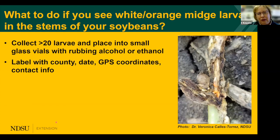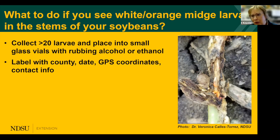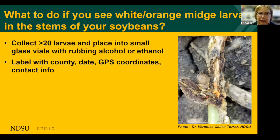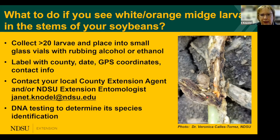It's probably going to continue to expand in North Dakota. If you see a lesion and open it with a small knife or fingernail and find small orange or whitish larvae, please collect them in rubbing alcohol or ethanol in a vial or glass jar. Label it with county, date, GPS coordinates, and your contact information, then contact your local county extension agent or myself. We'll come out and inspect the field, and we need to confirm the species by DNA testing.